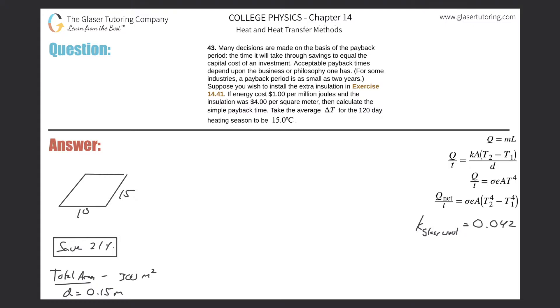Number 43: Many decisions are made on the basis of the payback period, the time it will take through savings to equal the capital cost of an investment. Acceptable payback times depend upon the business or philosophy one has. For some industries, the payback period is as small as two years. If energy cost one dollar per million joules and the insulation was four dollars per square meter, then calculate the simple payback time. The average delta T for the 120 day heating season is 15 degrees Celsius. You got to review number 41 here in order for this to make any sense. I'm going to kind of run through this. We have this heat loss through conduction formula over here.